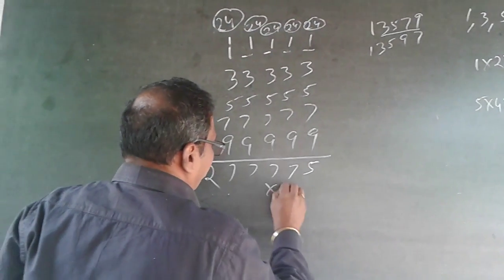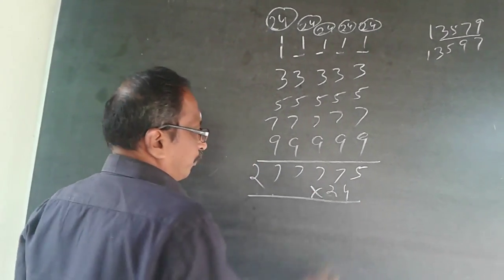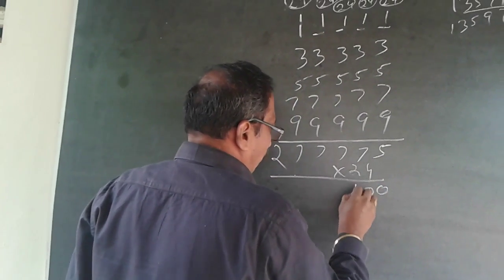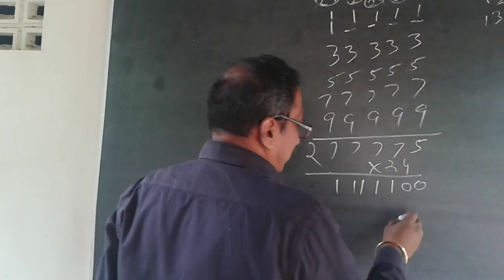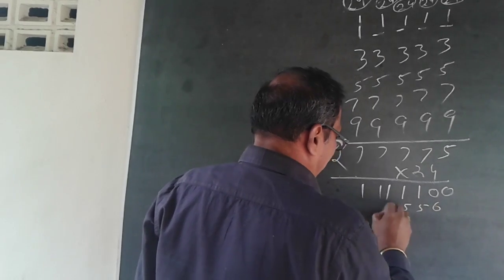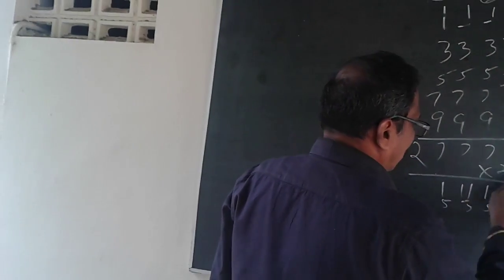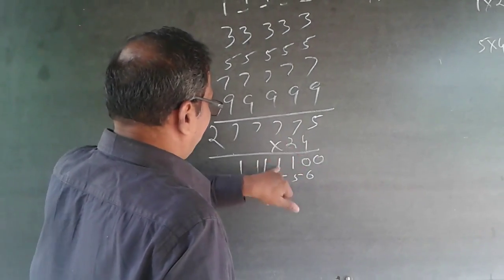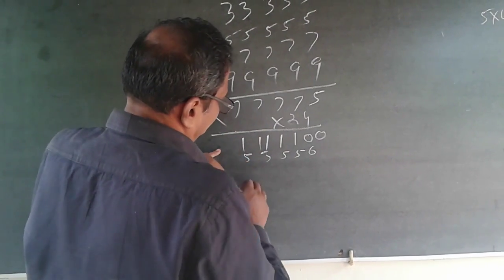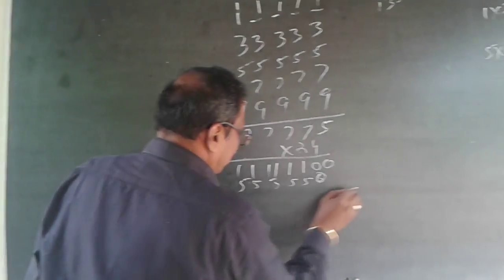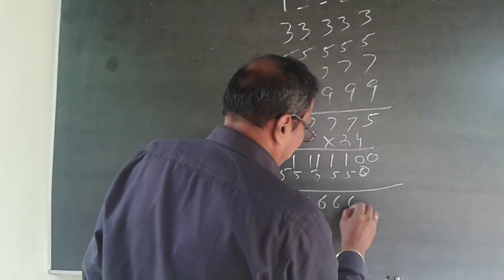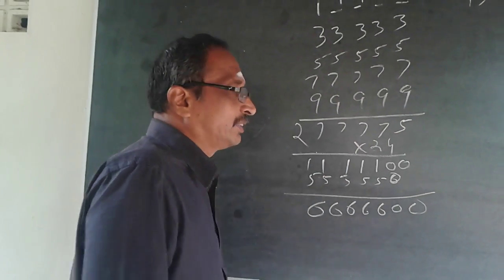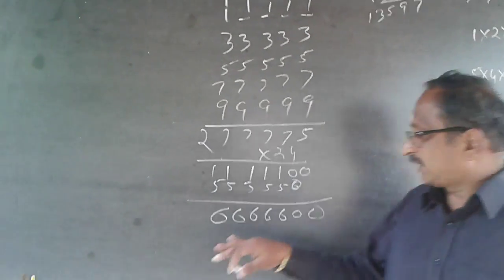Multiplying 27,775 by 24 gives the answer. Working through the multiplication: 27,775 × 24 = 6,66,600. So the sum of all five-digit numbers formed using 1, 3, 5, 7, 9 is 6,666,600.